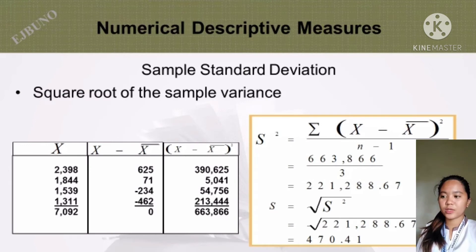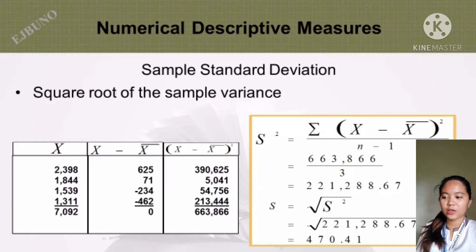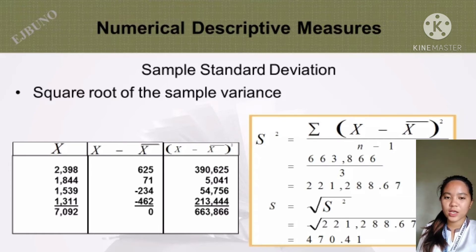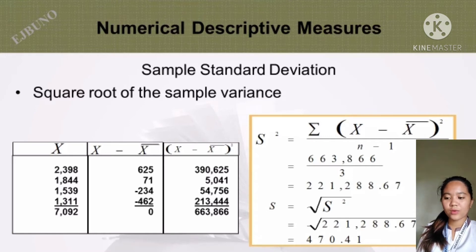Sample standard deviation is the square root of the sample variance. Given x total is 7,092 and the summation of (x minus x-bar) squared equals 663,866, s squared equals 663,866 over 3 equals 221,288.67. Therefore, s equals the square root of 221,288.67, which equals 470.41.